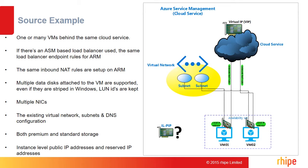Multiple disks: other than the OS disk, if there are several data disks attached to the VM, even if they are striped in Windows, LUN IDs are kept the same. Multiple NICs: there's a primary NIC and secondary NICs — more than one NIC is catered for. The existing virtual network along with any subnets, both premium storage and standard storage, instance-level public IP addresses, reserved IP addresses, and the same DNS configuration on the virtual network including the primary and secondary DNS addresses.